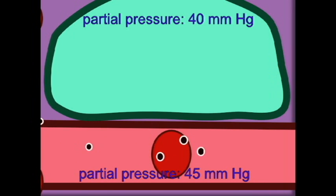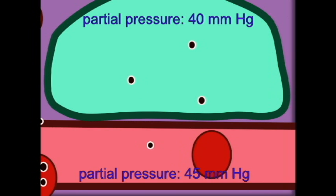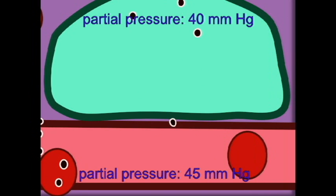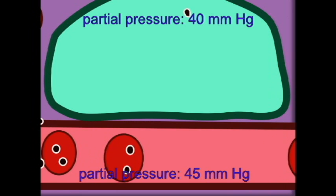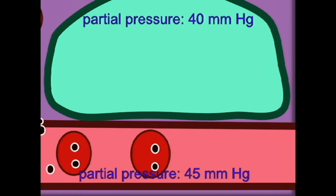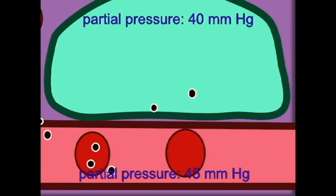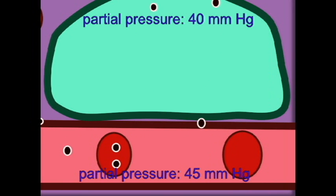If carbon dioxide has a partial pressure of around 45 in deoxygenated blood arriving at the lungs and a lower partial pressure, say 40 or beneath in the air sac, then carbon dioxide would leave the blood in the lung and enter the air sac.